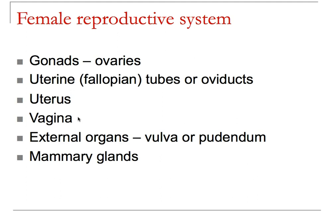Mother Nature creates a series of tissue structures that we collectively call the vulva, or attached to the pudendum, and this allows for the interaction between the male reproductive structure and the female reproductive structure. It has pretty much the same physical structure even though they don't look the same.